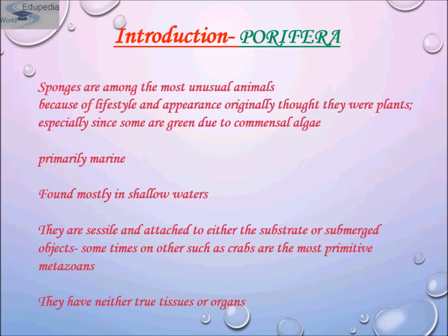Sponges have cellular level organization, meaning their cells are specialized so that different cells perform different functions. However, similar cells are not organized into tissues. Their bodies are a loose aggregation of different kinds of cells. This is the simplest kind of cellular organization found among parazoans.